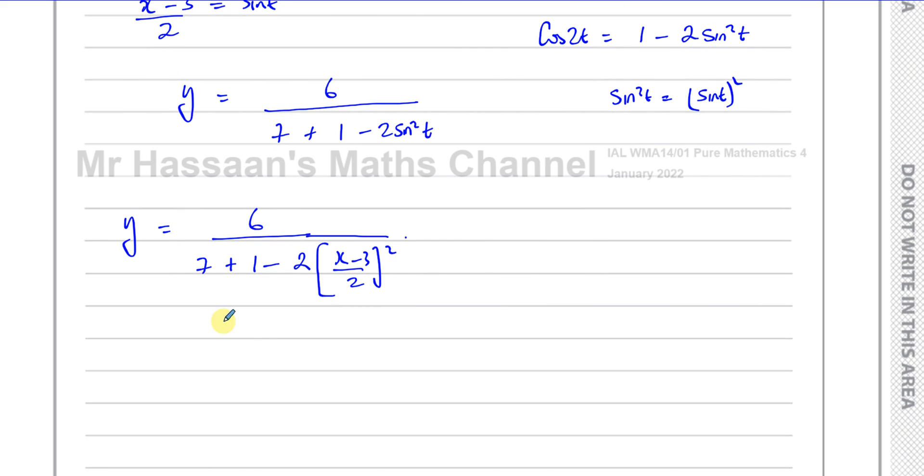So I need to simplify this now. So this is going to give me 6 over, this is 7 plus 1 is 8, minus 2 times X minus 3 squared over 4. That cancels with that. That's going to give me a 2 there.